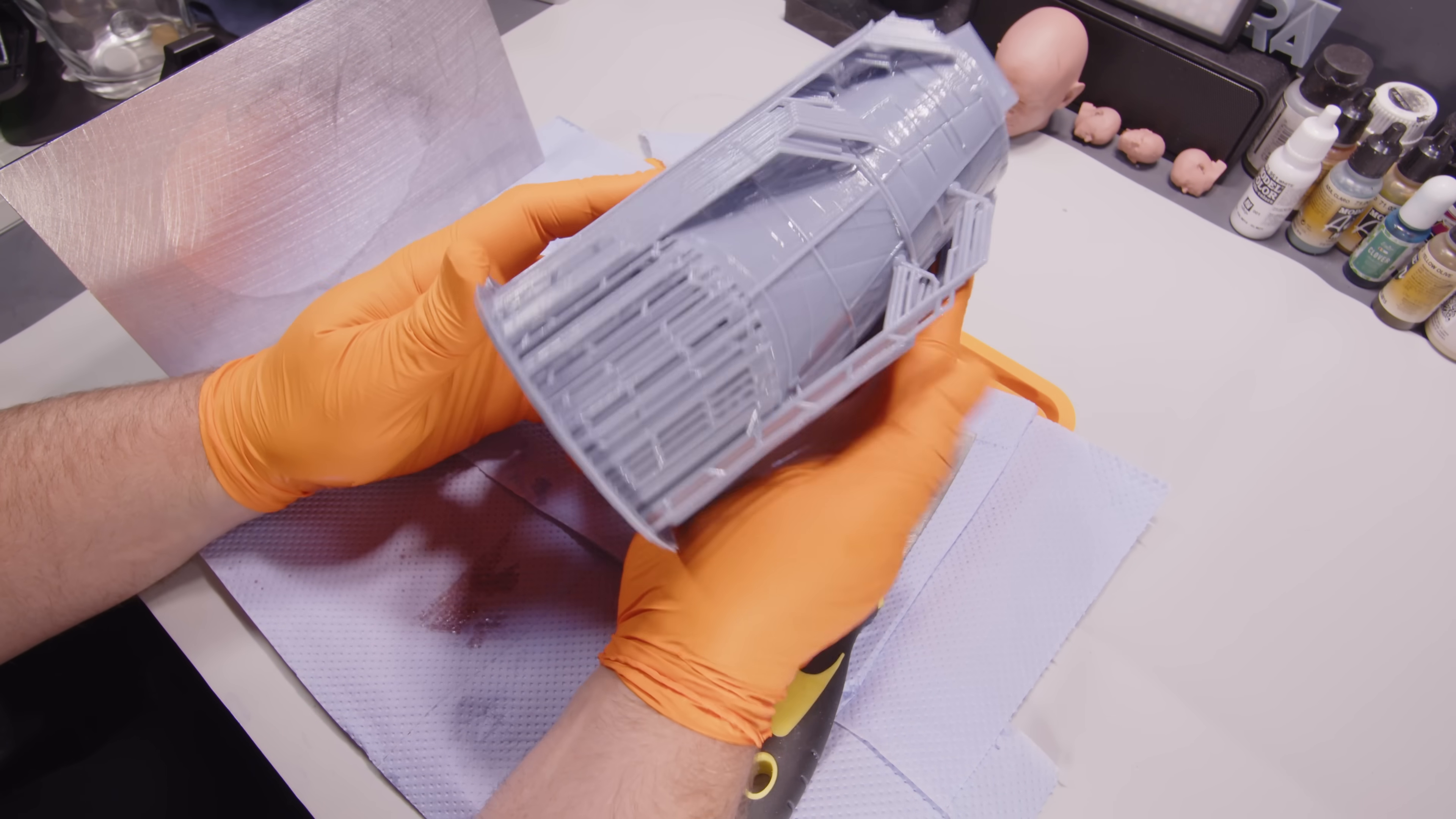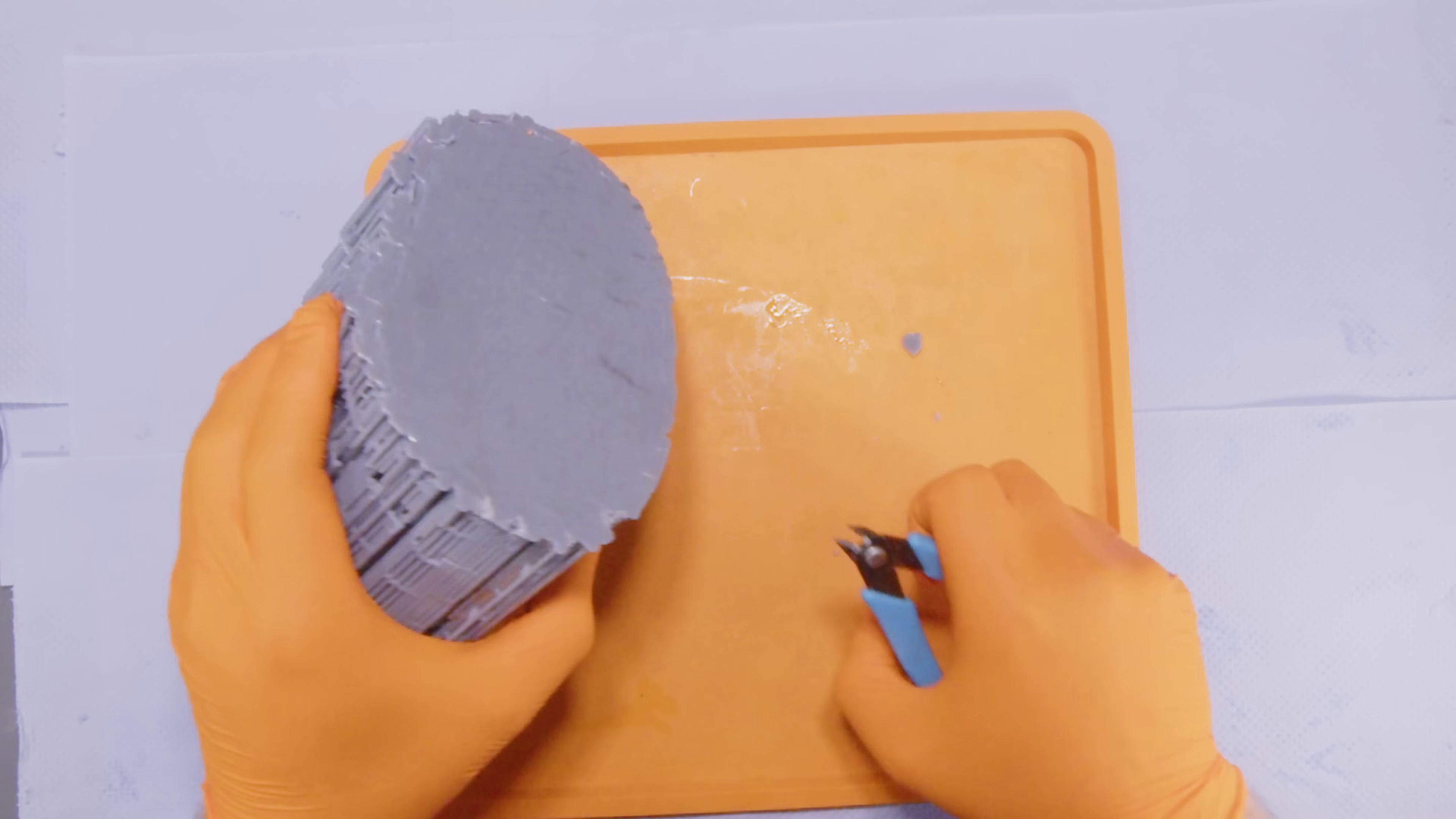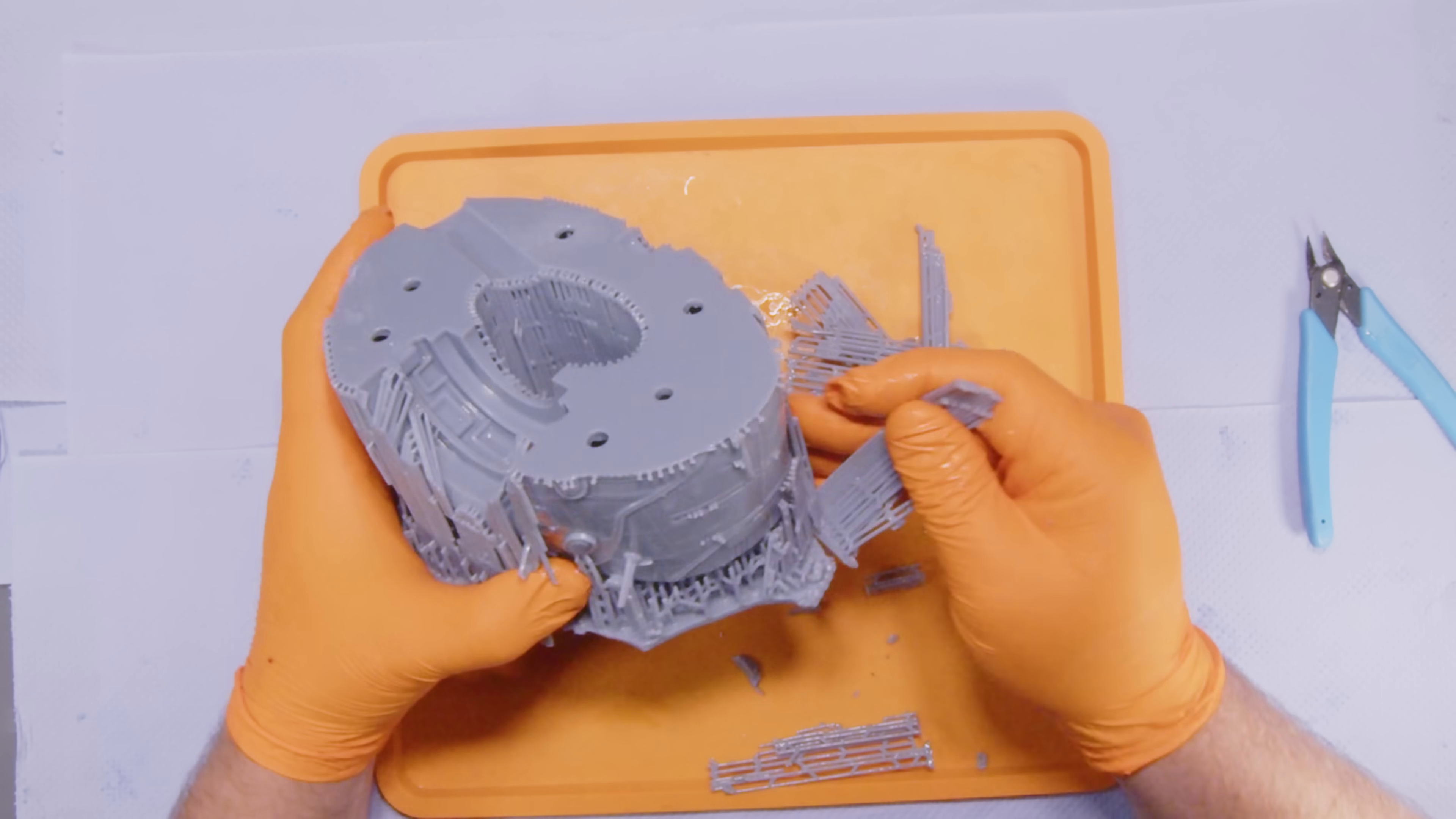Once each part had finished printing, it was time to remove the supports and inspect the part. Sometimes it is best to remove the supports after the washing process, but in this case, it made more sense to remove the supports first. I added a lot more support material than is usually needed. This was due to the part being hollow, and needing a lot more structural support than normally needed, so it did not deform whilst going through the printing process.